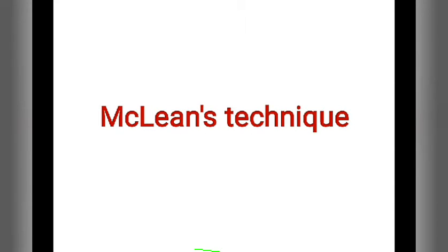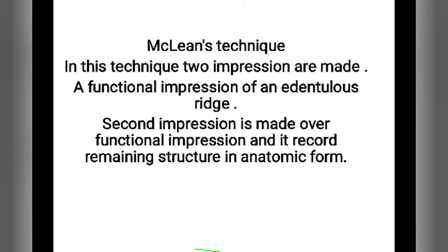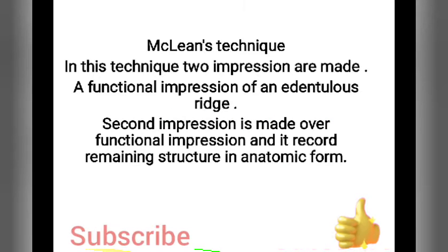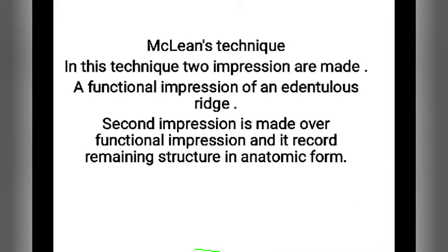Now, what is Maclean's technique? In this technique, two impressions are made: a functional impression of an edentulous ridge, and a second impression made over the functional impression that records the remaining structures in anatomic form.